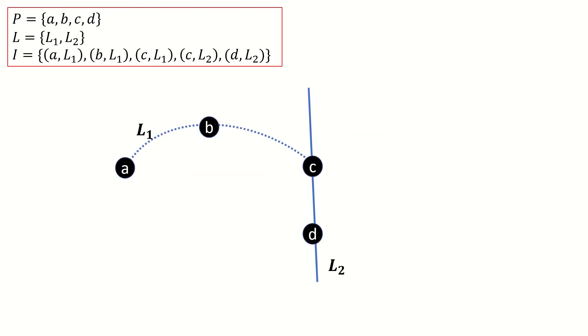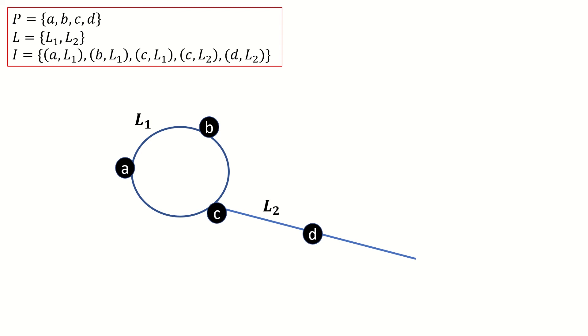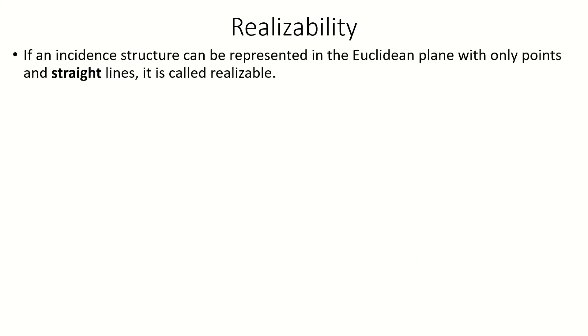Our lines don't even have to be straight — they can be curved as necessary so that they go through all the points they are defined to be incident to. Our lines could even be circles. Points can also be drawn as close or as far apart as we wish. If an incidence structure can be visually represented with only points and straight lines in the Euclidean plane, it's called realizable.